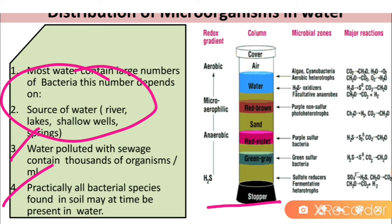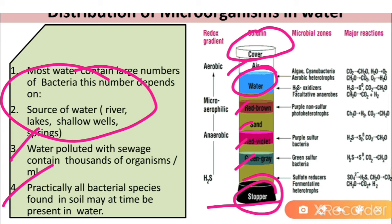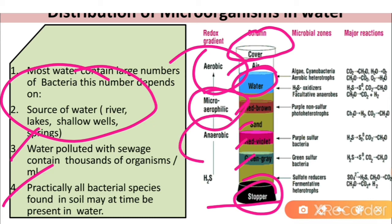Looking at this figure, we can see a column starting from air at the top, then water, then red-brown sand, red-violet, green, and gray layers with a stopper at the bottom. We can observe which microorganisms grow in each zone. At the top zone, aerobic microorganisms can grow because air is present. Below that are microaerophilic, then aerobic-anaerobic zones, and further down an H₂S zone with different microbial zones.